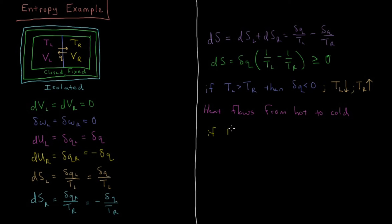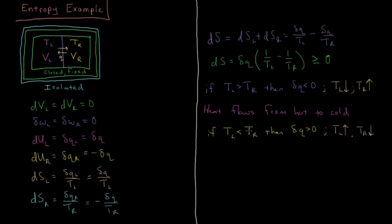If TL is less than TR, then 1 over the smaller number is bigger, minus 1 over the bigger number is smaller — big minus small gives a positive number. A positive times a positive gives a positive entropy change, so dQ is greater than zero. That means heat flows from the right to the left — the higher temperature object decreases and the lower temperature object increases until they equilibrate.